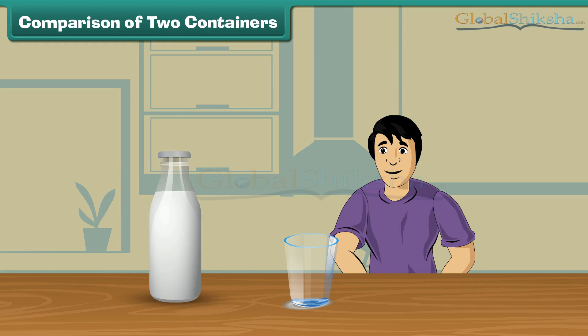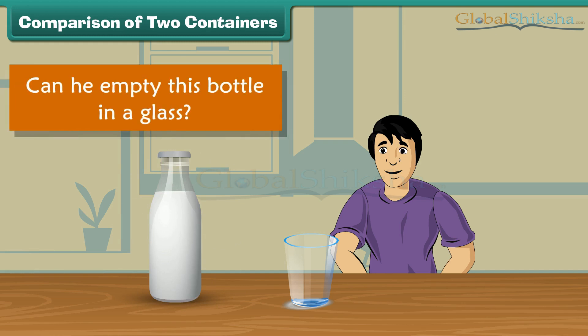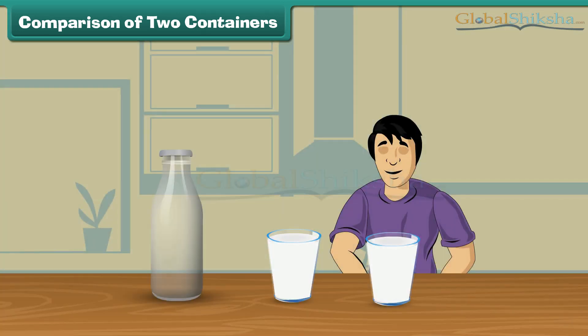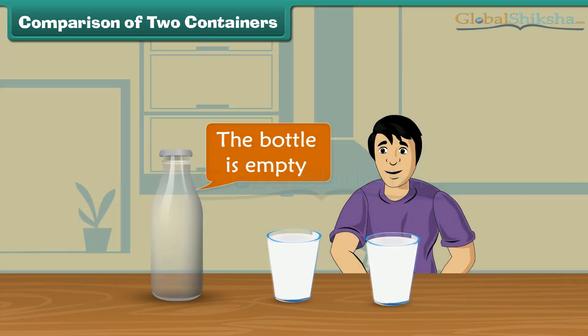Sam brought a bottle of milk. Can he empty this bottle in a glass? He fills the glass with the milk from the bottle. Look, milk is still there in the bottle. He then takes another glass and pours the remaining milk in it. Look, the bottle is empty now. Thus, Sam can empty this bottle of milk into two glasses.